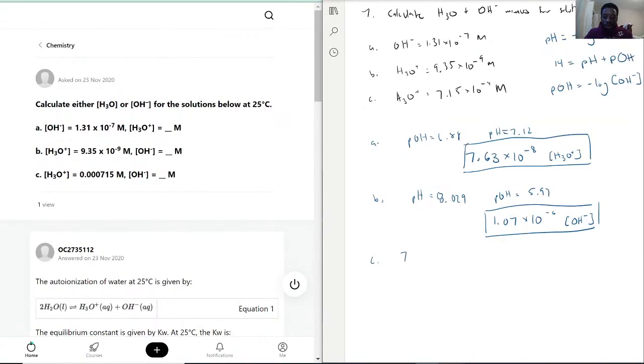For the last one, problem C, we have 7.15 times 10 to the negative 4. The pH of that would be negative log of that amount. We get pH of 3.15, which makes sense because it's such a high concentration, so we have a pretty low pH. That's a lot of acidic complex.